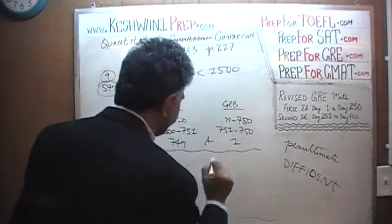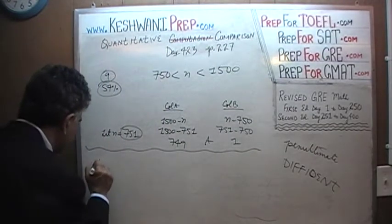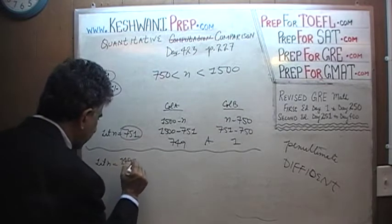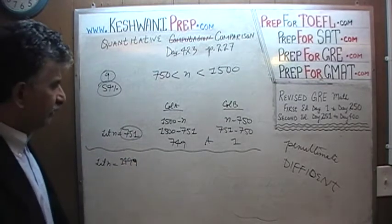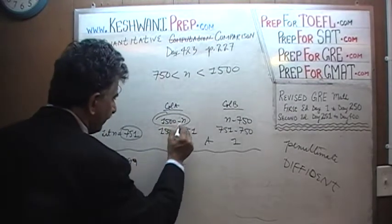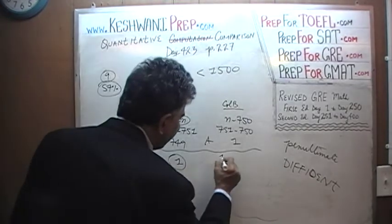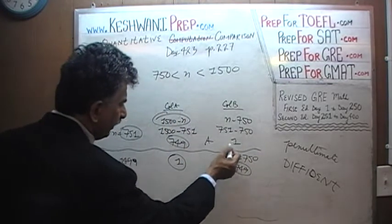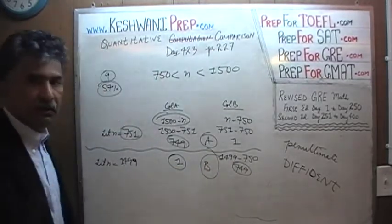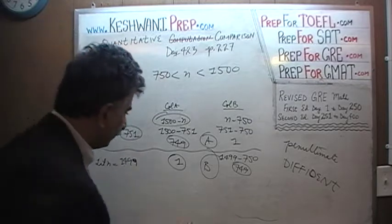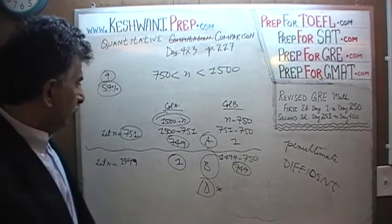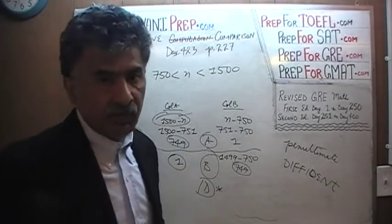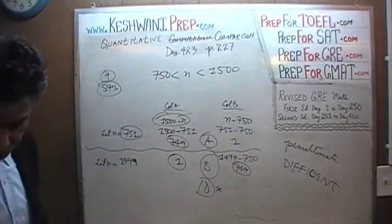Now we have to try the other extreme. Let N be 1499, all the way to the other extreme. You can immediately see what's going to happen. 1500 minus 1499 is going to be 1, and 1499 minus 750 is going to be 749. The situation has reversed. The 749 appears here, the 1 appears here. Now the answer is B. Before the answer was A, now the answer is B. It's the mirror image of each other. And therefore, the answer is D. We can't really tell which quantity is going to be bigger, it depends on which end of the spectrum you are at. The answer is D.